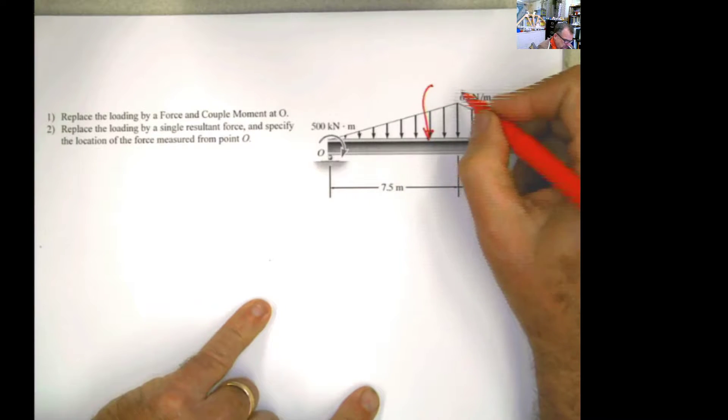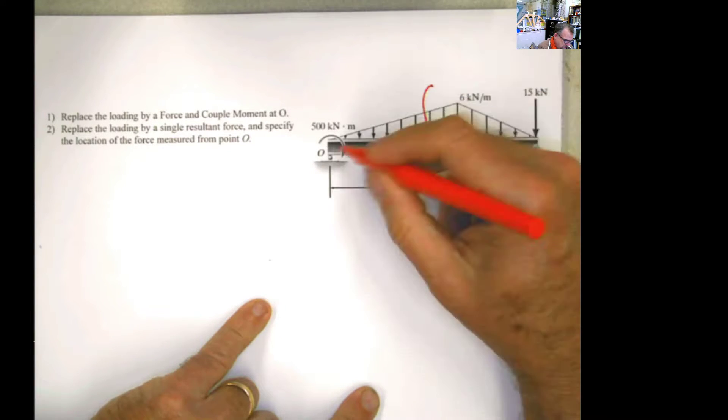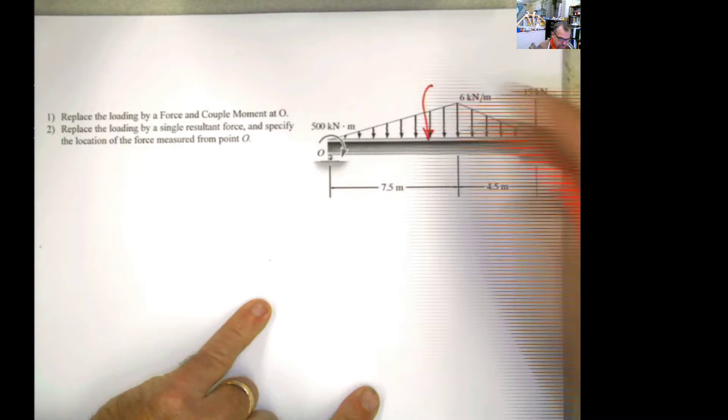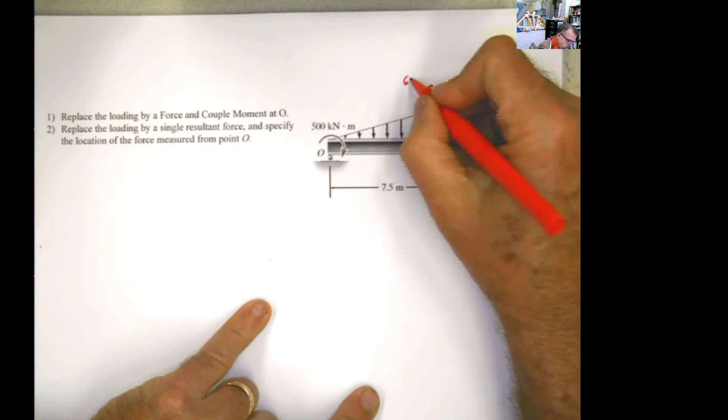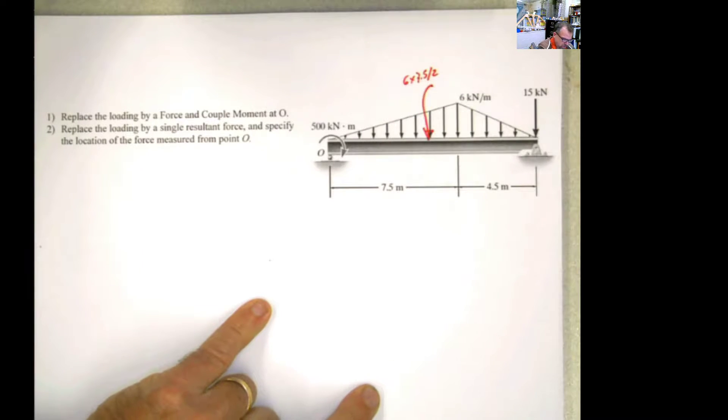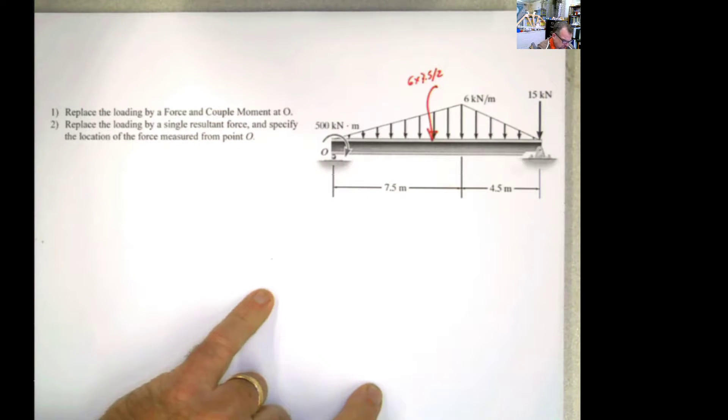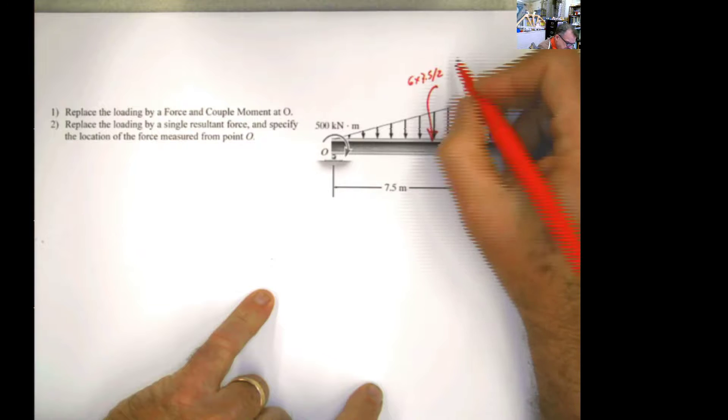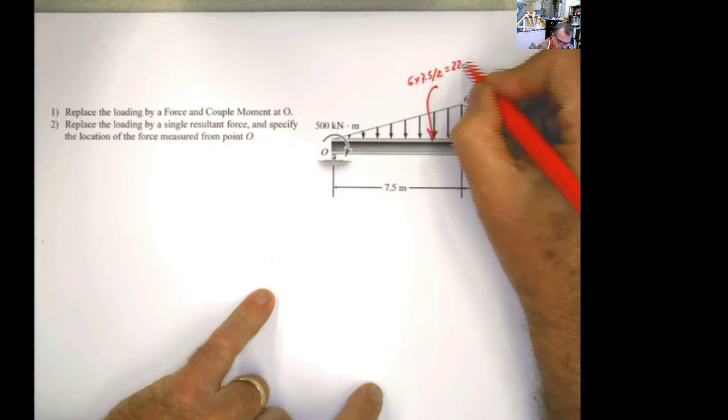The only thing we have to do is convert those distributed loadings into an equivalent concentrated load. In order to do that, we calculate the area of this: 6 times 7.5 divided by 2. That's the area of this triangle. How much is that? 22.5 kilonewtons.